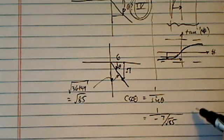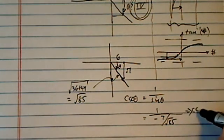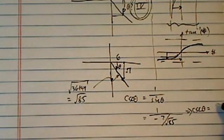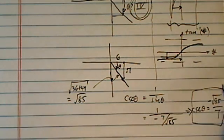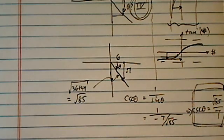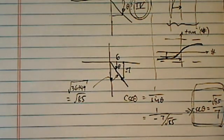And then one more simplification. CSC theta, then equal to radical 85 over 7 with a minus sign. So here's the final answer. So cosecant of theta is equal to minus radical 85 over 7.